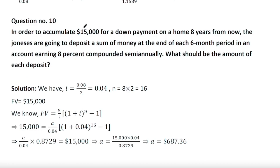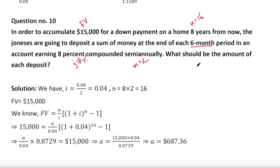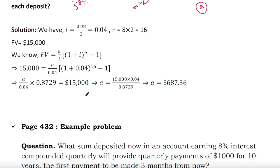Another problem: In order to accumulate a specified amount for a down payment on a home 8 years from now, Jonas plans to deposit a sum of money at the end of each six-month period in an account earning 8% compounded semi-annually. So j = 8%, m = 2, and n = 8 × 2 = 16. What should be the amount of each deposit? Calculate A using the future value formula — try it yourself to get the result.